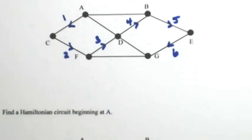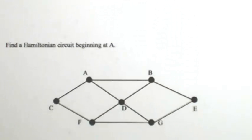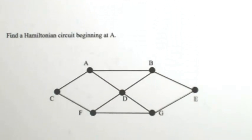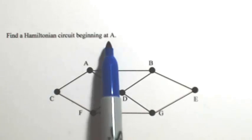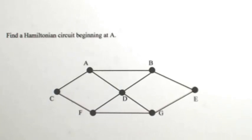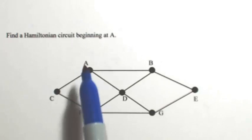Now suppose I want to do a Hamiltonian circuit, which means I have to end and start at the exact same vertex. This one wants me to start at A, so I'm going to start at A and end at A, making sure that I hit all the vertices once and only once.